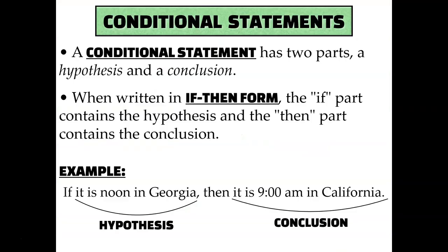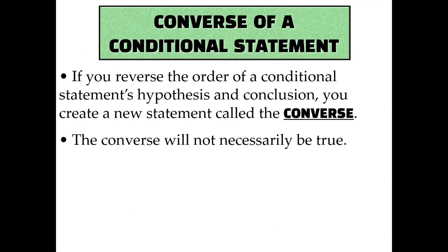First, let's review. A conditional statement has two parts: the hypothesis and the conclusion. The hypothesis is whatever follows the word 'if', and the conclusion is whatever follows the word 'then'. To create a converse of a conditional statement, you just flip around the hypothesis and the conclusion. As we alluded to in the previous lesson, converses will not necessarily be true — that is the main focus of this lesson.